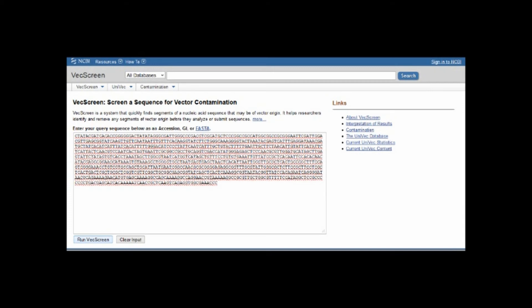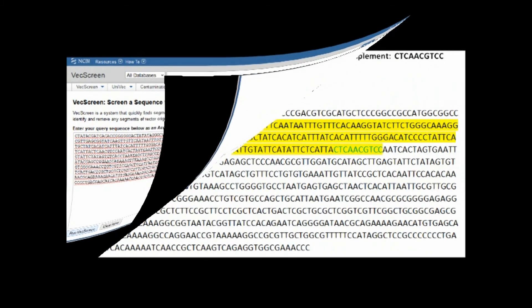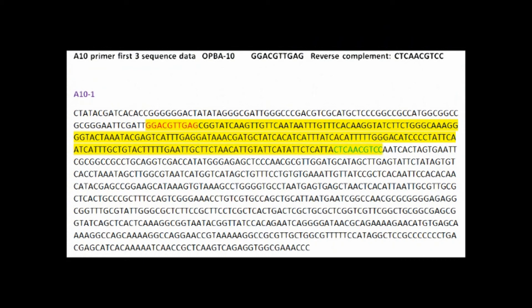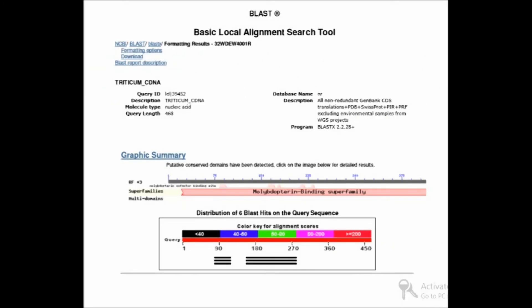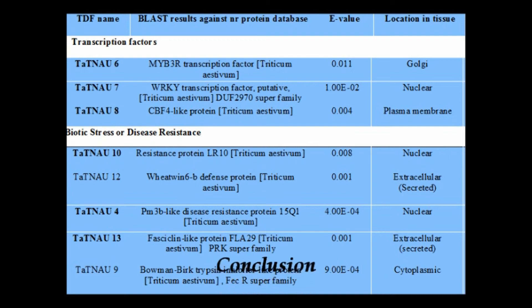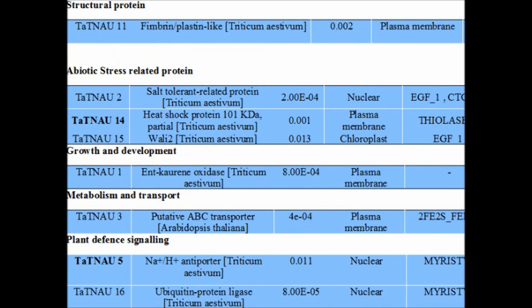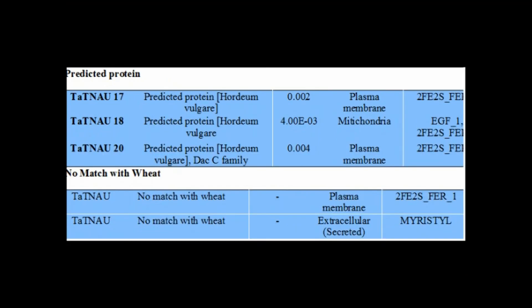Sequence analysis: Vector sequences were removed using the VecScreen tool. TDF sequences were translated into amino acid sequences in a single frame using the TRANSIC program. BLASTX sequence similarity search for 21 TDF sequences was performed against GenBank. Based on similarity search against the non-redundant protein database, the transcripts were found to be involved in transcription factors, biotic stress, structural proteins, abiotic stress-related proteins, growth and development, metabolism and transport, and plant defense signaling.